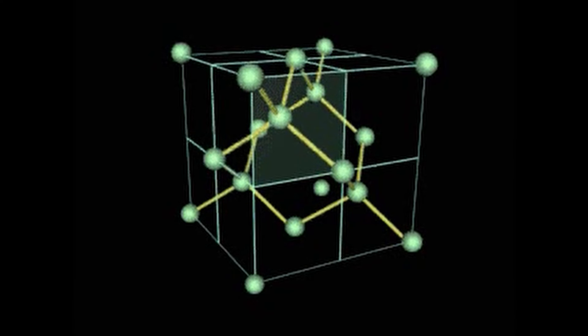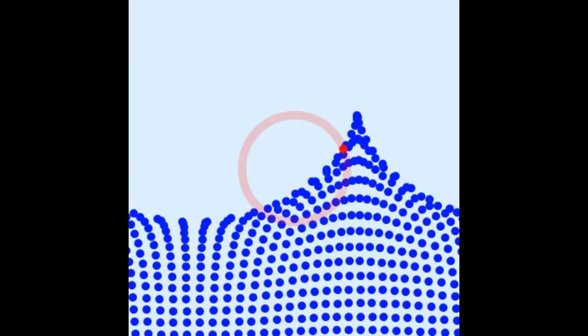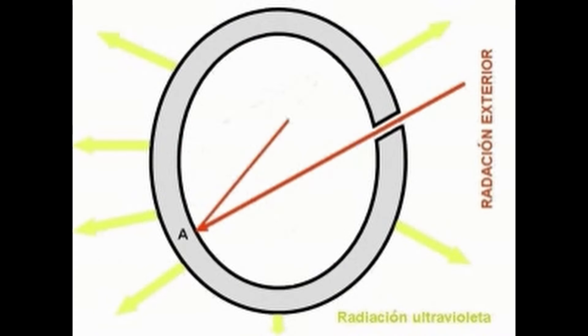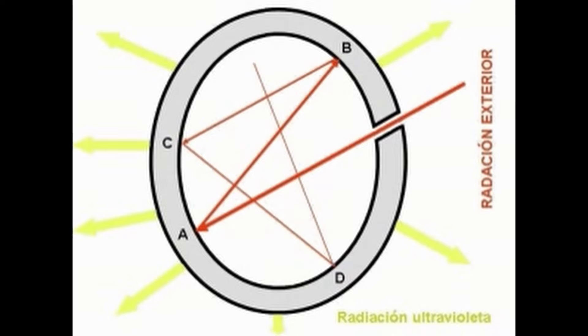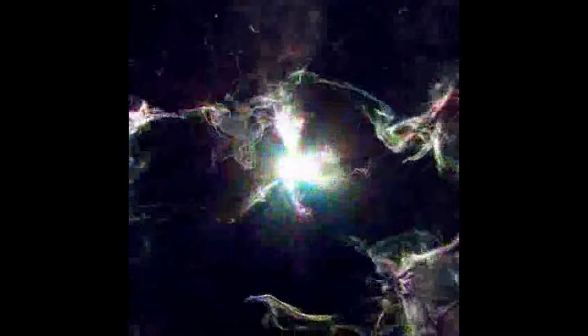Entanglement entropy is deeply connected to the holographic principle, which is a principle of string theories and a supposed property of quantum gravity. It describes how information contained within a volume of space can be represented by a theory that exists on the boundary of that space. The holographic principle suggests the universe can be seen as a two-dimensional information structure painted on the cosmological horizon, such that the three dimensions we observe are only an effective description at macroscopic scales. Essentially, all information within a volume of space can be encoded on a boundary to the region, preferably a light-like boundary like a gravitational horizon.